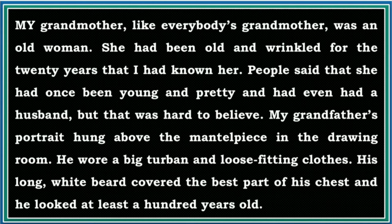The first line of the chapter: 'My grandmother, like everybody's grandmother, was an old woman. She had been old and wrinkled for the 20 years that I had known her.' The author is saying that his grandmother was an old woman like others, with a wrinkled face. Her skin had almost shrunk and she had the same wrinkled face for the last 20 years. Wrinkled means the lines which form on someone's face as they grow old.